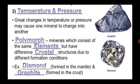Minerals which consist of the same elements but have a different crystal structure due to different formation conditions are known as polymorphs. For example, diamond and graphite.